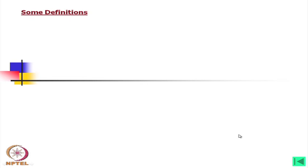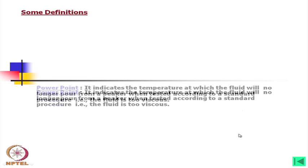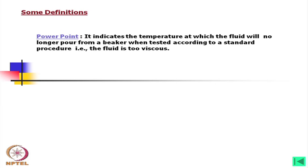Along with that we must know some definitions and terminology. There is a spelling mistake here — it is not 'power point' but 'pour point,' P-O-U-R. Pour point indicates the temperature at which the fluid will no longer pour from a beaker when tested according to a standard procedure. This means the fluid is too viscous, and this test is conducted particularly at low temperatures.